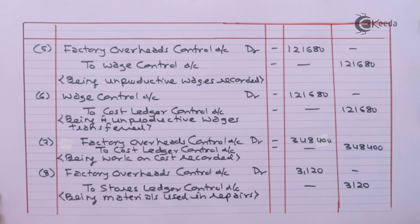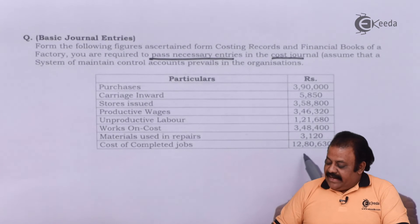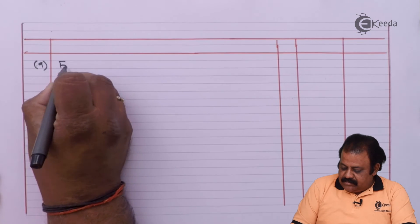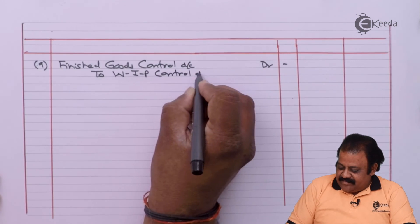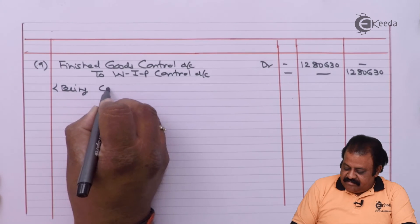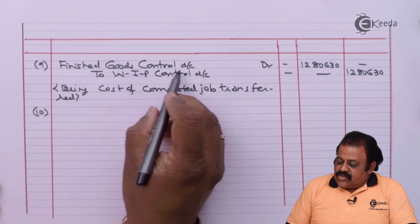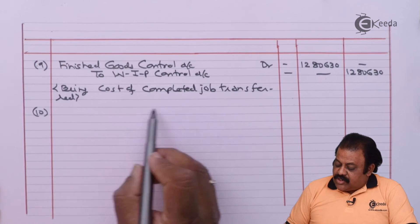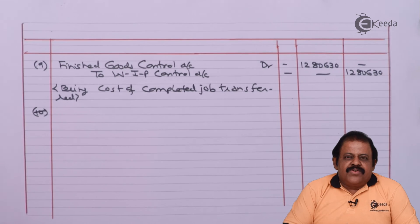Materials used in repairs are recorded to the appropriate overhead account. Cost of completed job 12,80,630. Entry: Finished Goods Control Account debit to Work in Progress Control Account, being cost of completed job transferred — amount is 12,80,630.